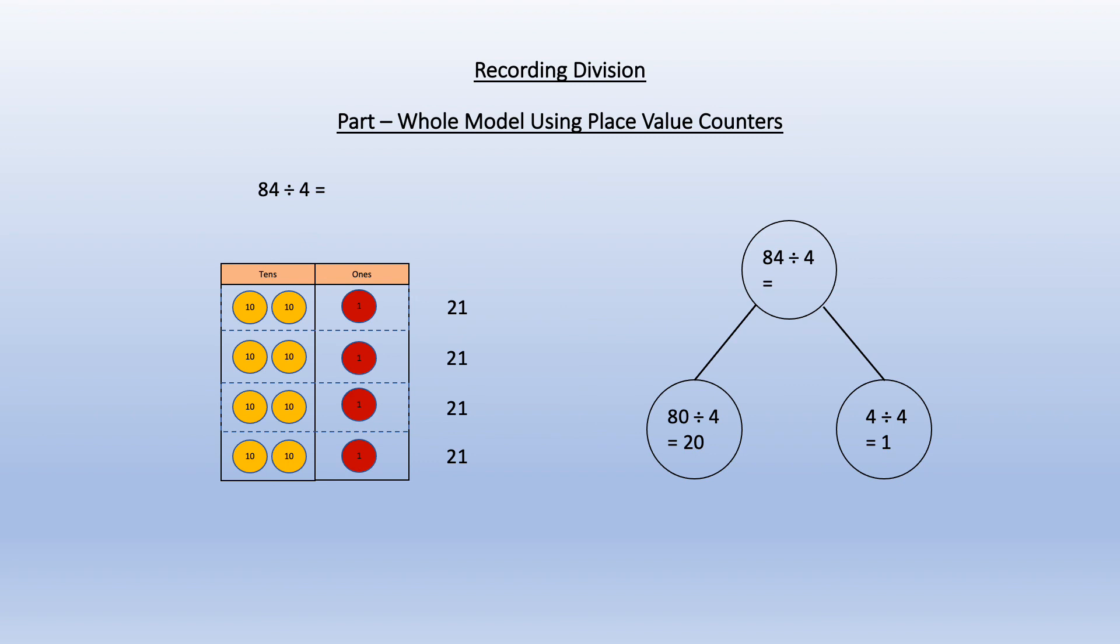We can see that each row has two yellow tens and one single ones making 21, which can be put in the top circle, and then back into the original number sentence.